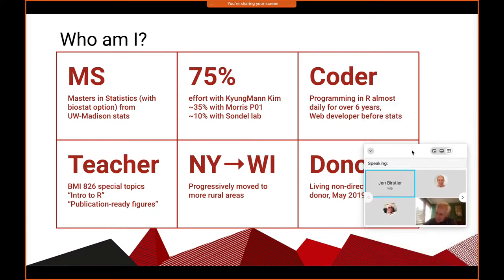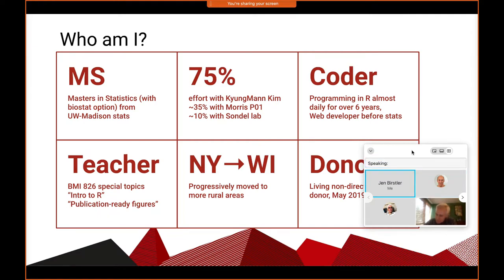I see myself mostly as a coder, actually. I program in R daily for about six years now. Even before this I was a web developer, so most of my background is in programming. I see myself more as a coder among statisticians, but to the outside world everyone would just see me as a statistician. I'm also a teacher — I teach a special topics course in this department in biostats. One is intro to R and the other is publication-ready figures. I teach them in the fall, so if you're interested in those courses, let me know.